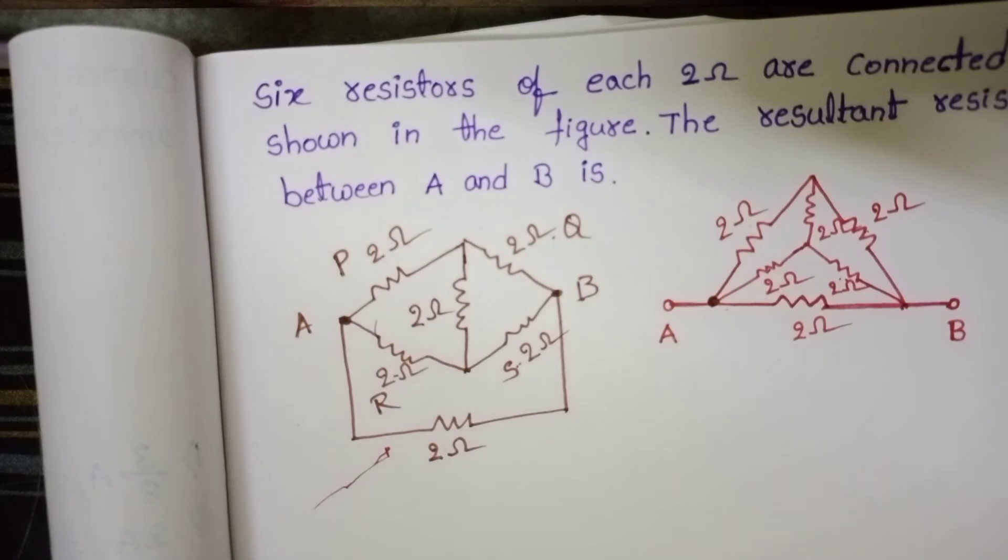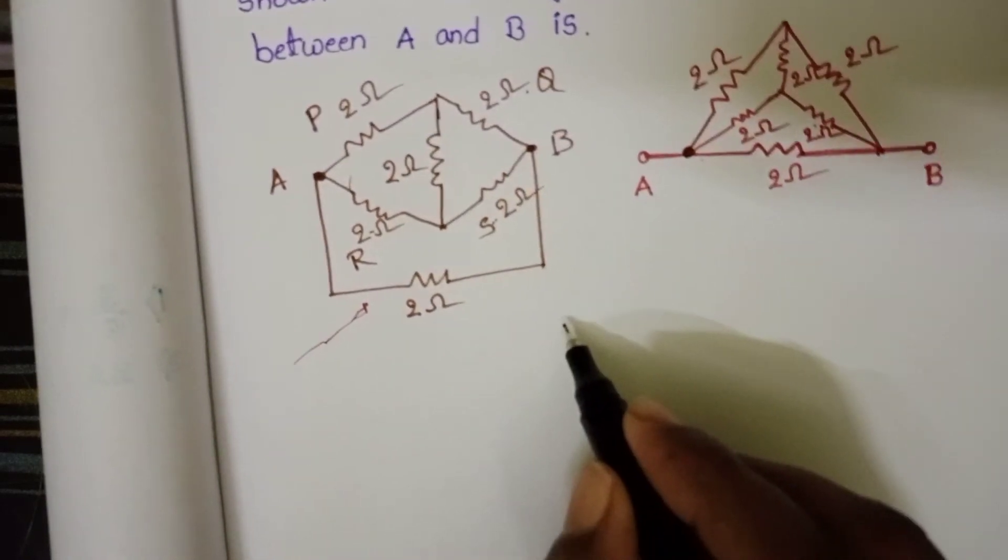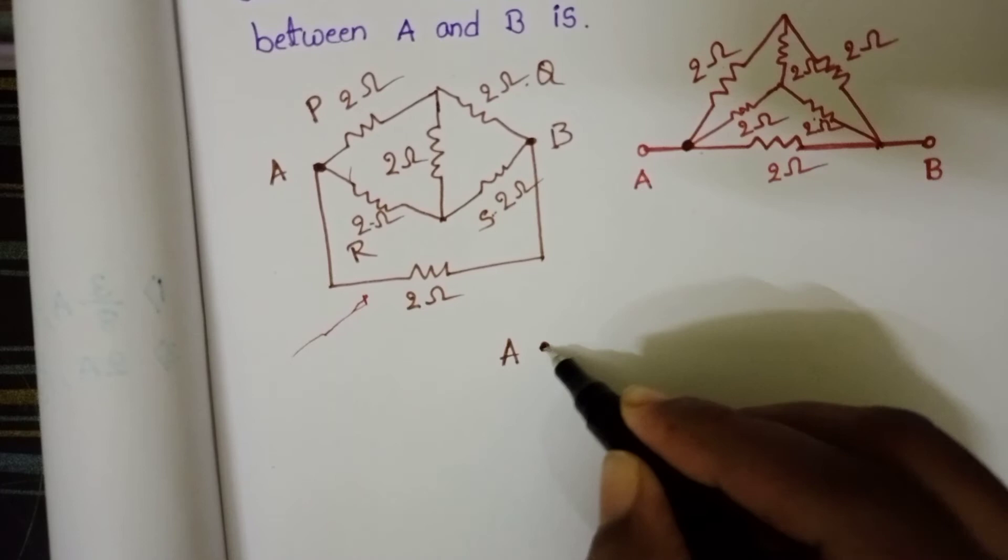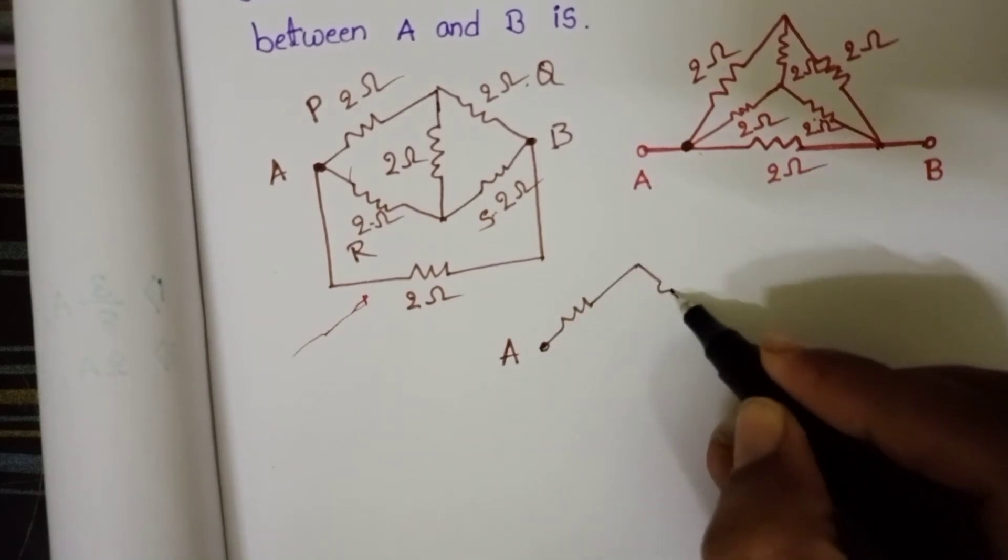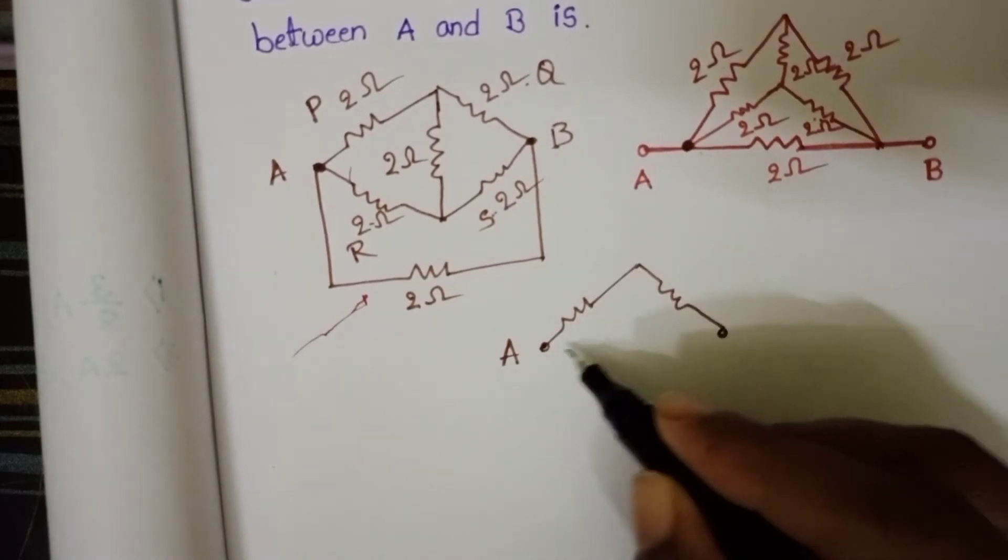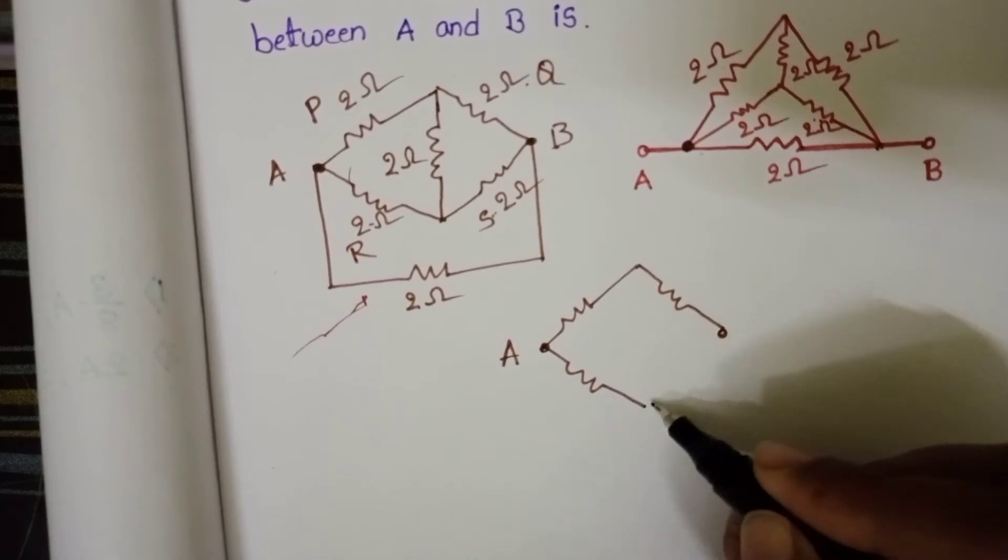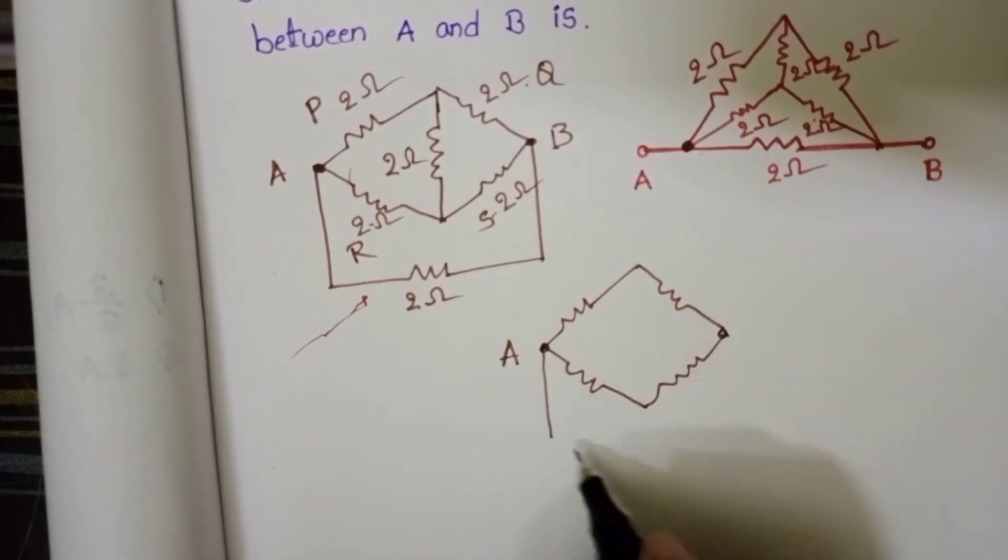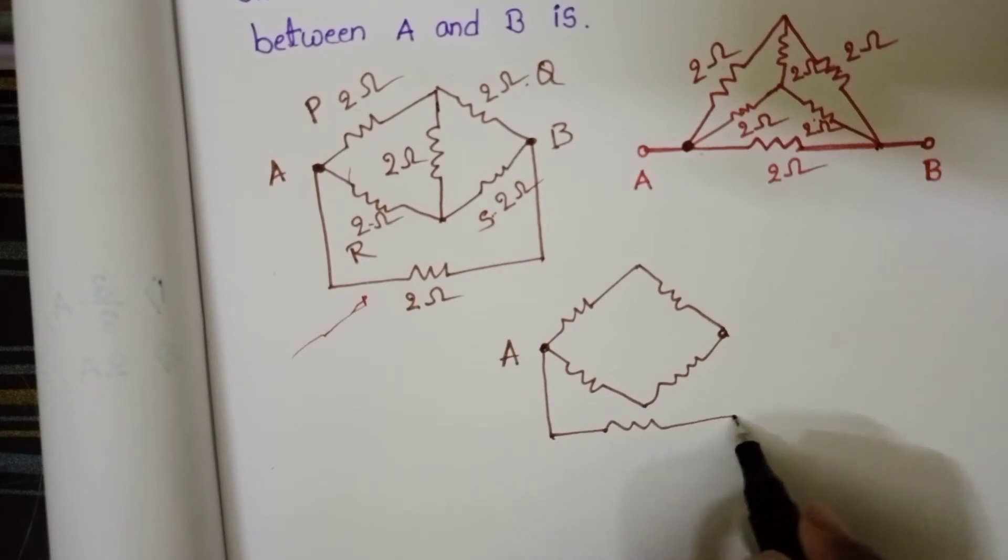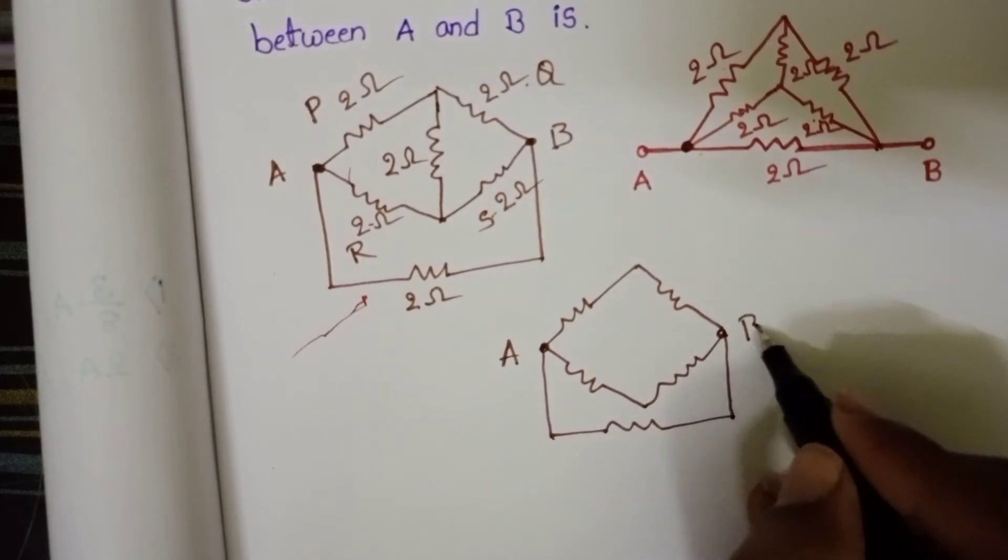Now the circuit diagram becomes point A, point B. And these 2 resistors connected in series. And here another resistor is connected in between A and B terminals.